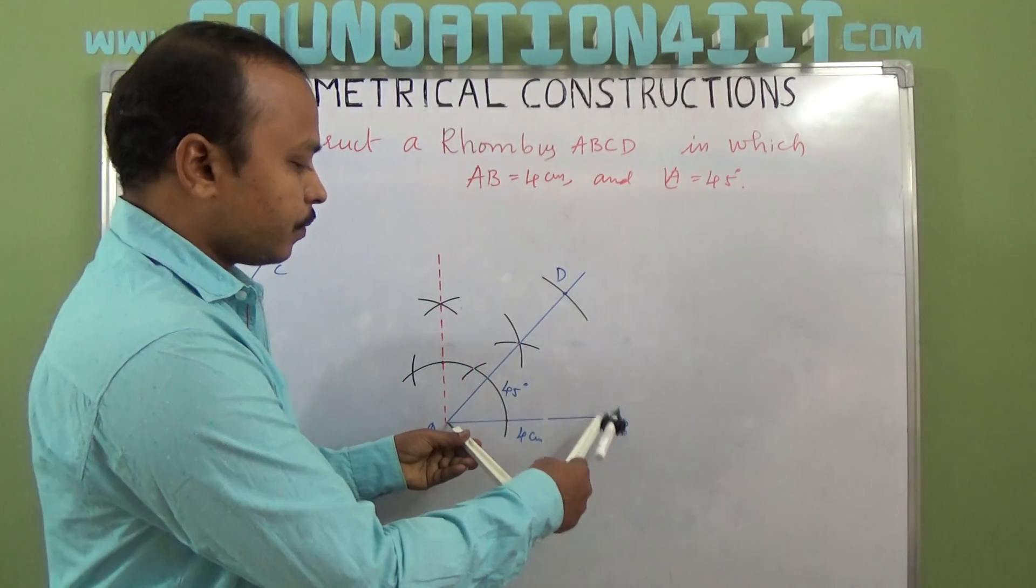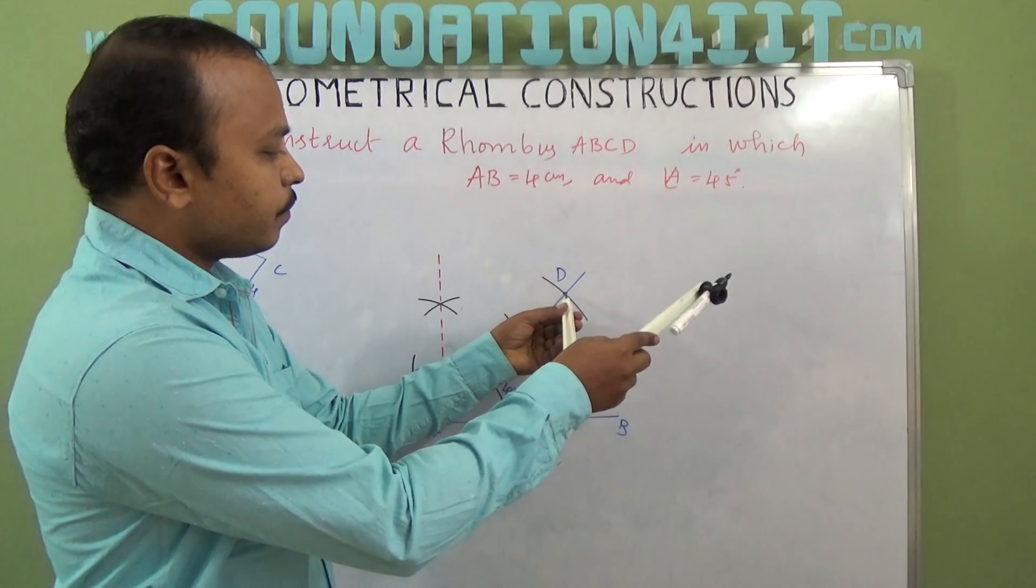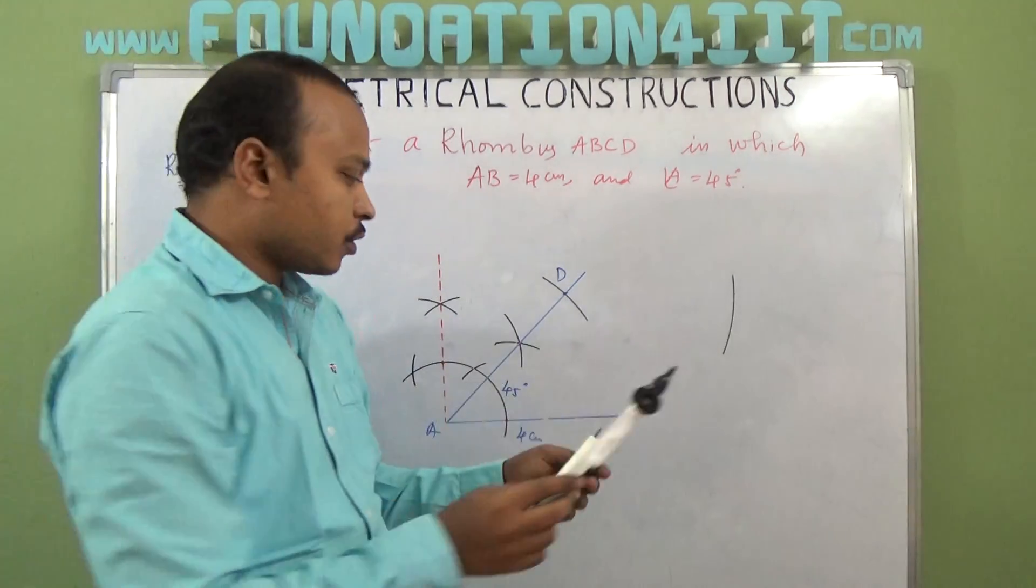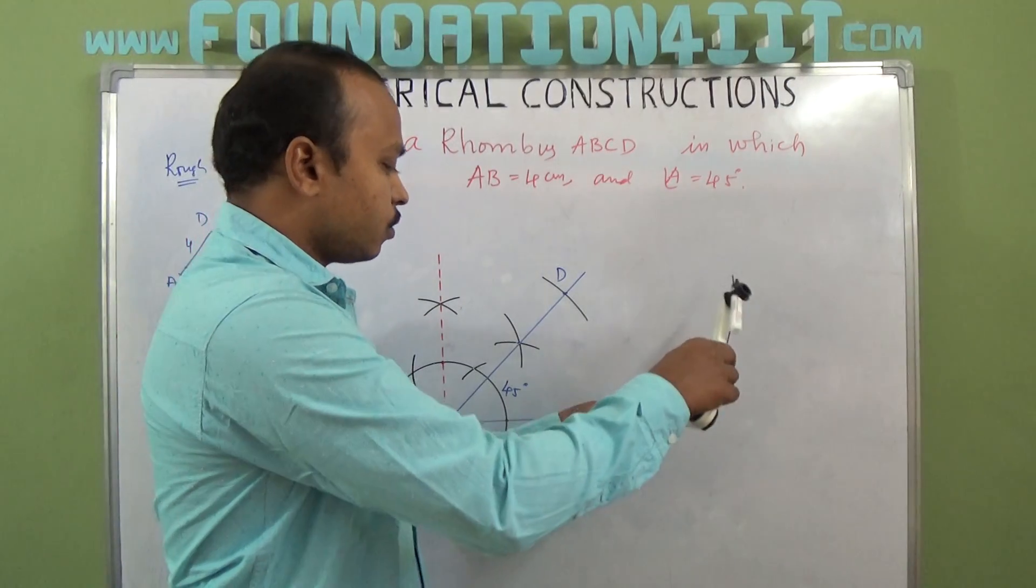Now, whatever it is—AB or AD—same. From D draw an arc, and same 4 centimeters, from B also draw an arc.